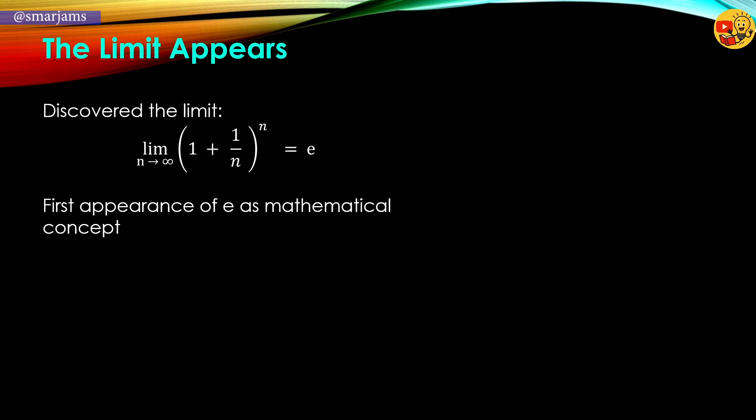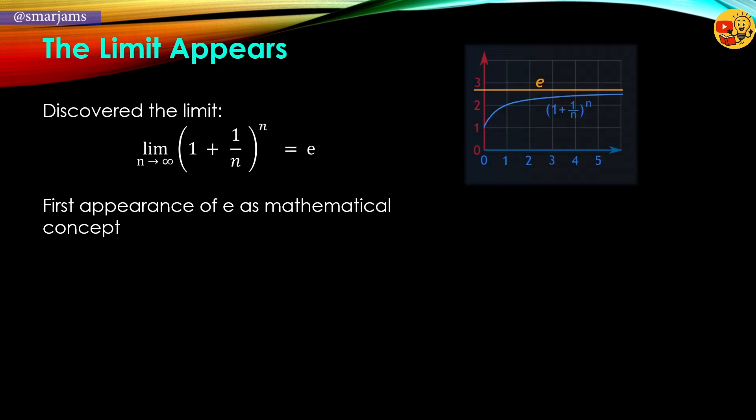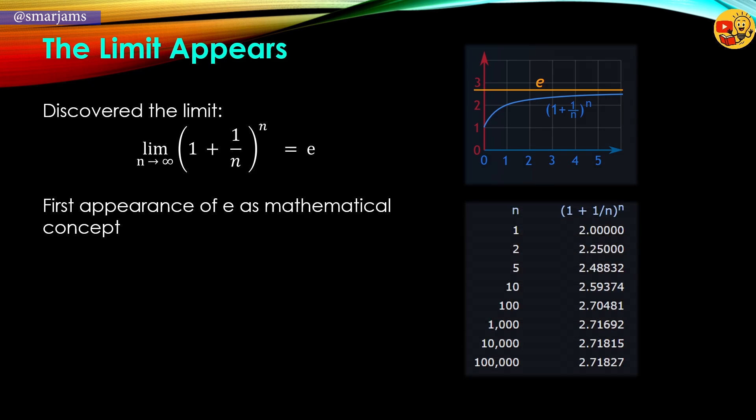What if we compound endlessly, more and more frequently, without limit? Bernoulli wrote this expression: the limit as n approaches infinity of (1 + 1/n) raised to the power of n. This limit approaches 2.71828. He didn't name the number, and he didn't know how profound it would be. But this was the birth of e — a number born from the logic of continuous growth.